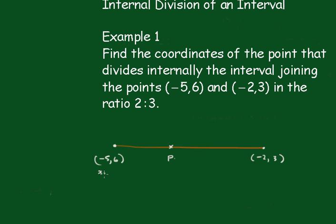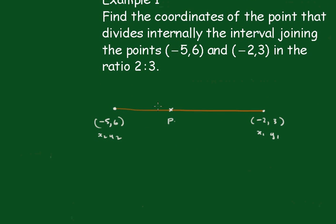Now this is going to be my x2, y2, and my x1, y1. But as I said before, it doesn't matter. Make that x1, y1 if you like. Now your form is 2 to 3.